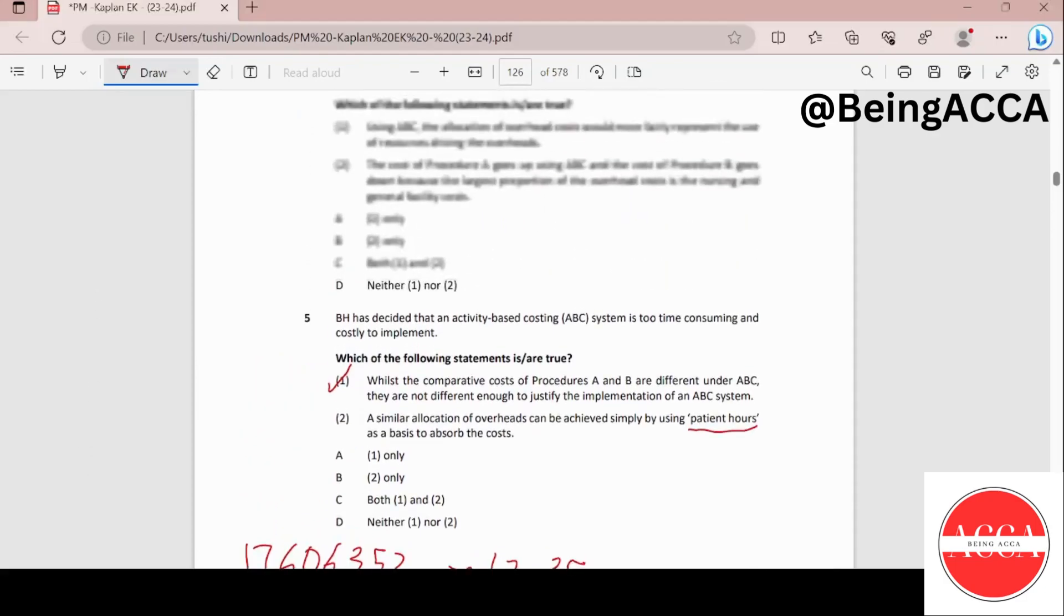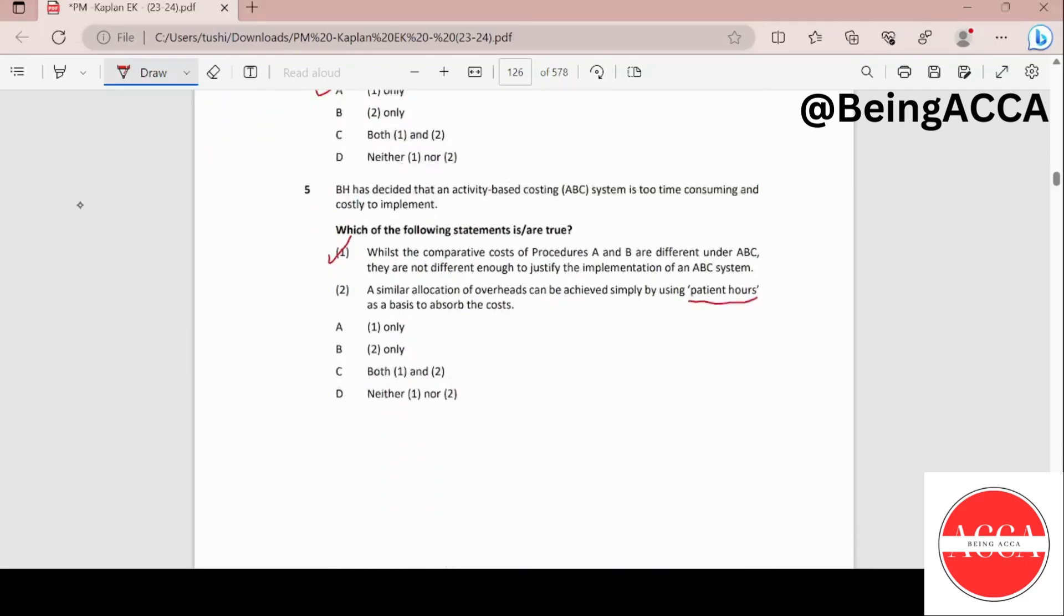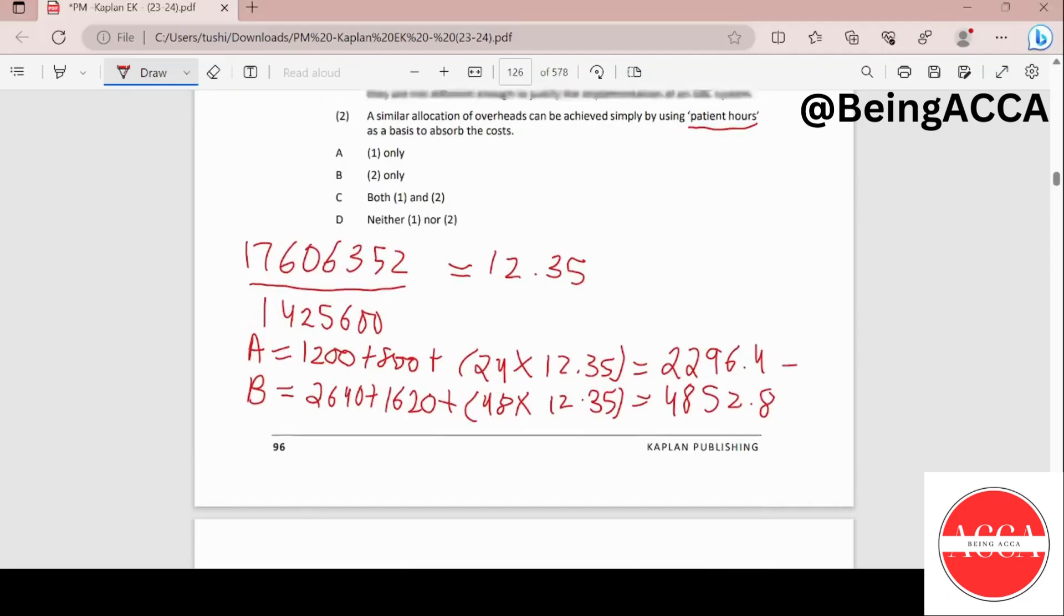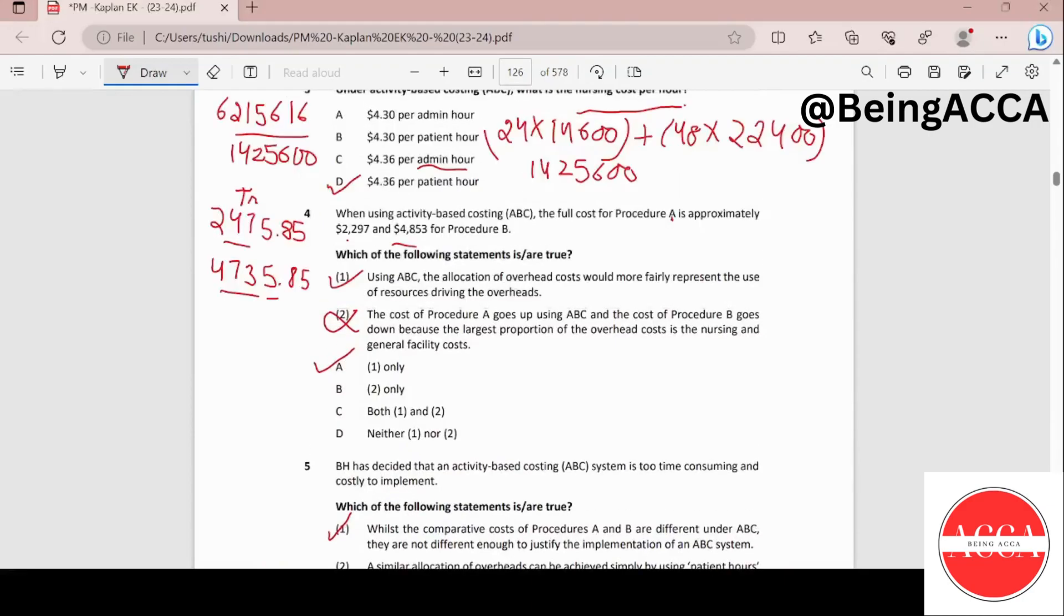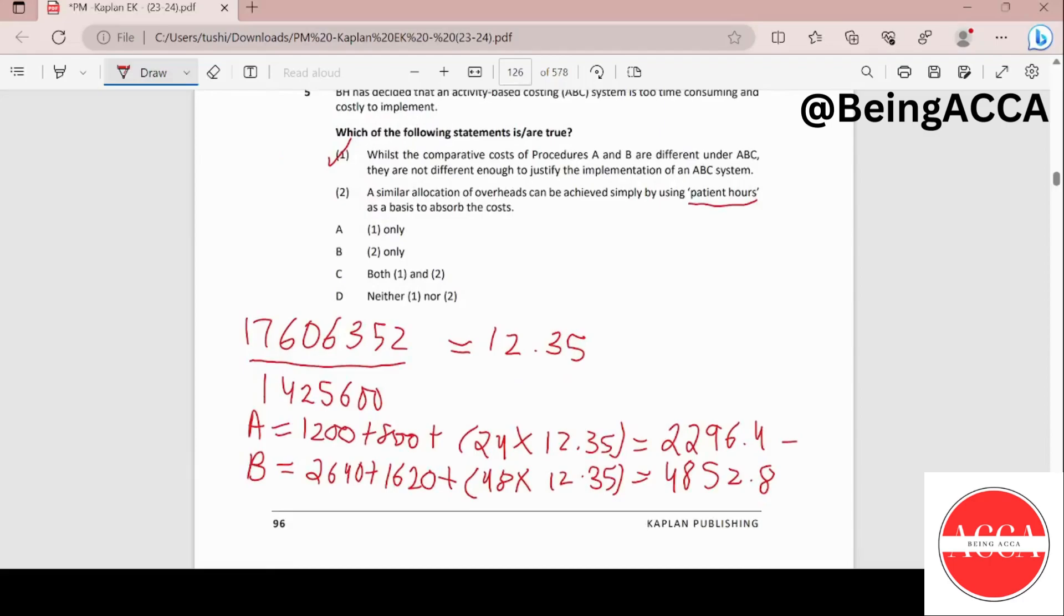So if I just compare according to the ABC numbers, this is 2297 and this is very similar. This is just a negligible difference of 0.6 dollars. And for procedure B it was 4853 and this is also if you round out it will exactly come to 4853. So yes, the statement is correct because it will lead to a similar allocation of overheads. And hence both the statements are correct making my answer as option C.